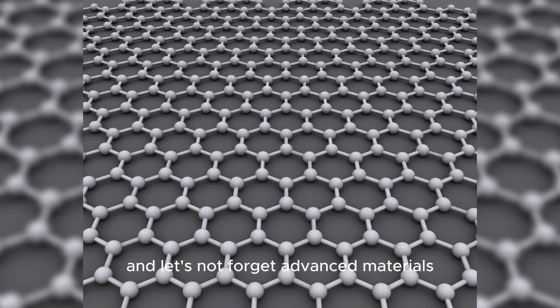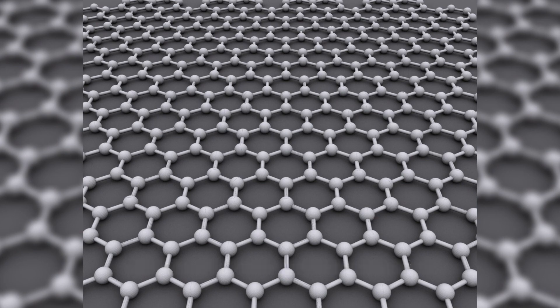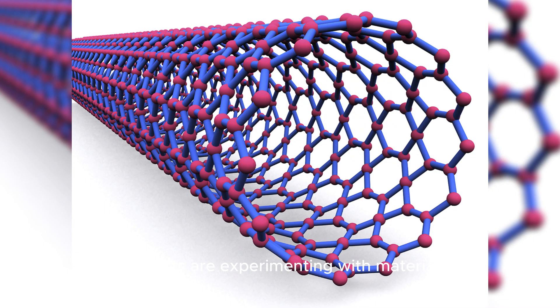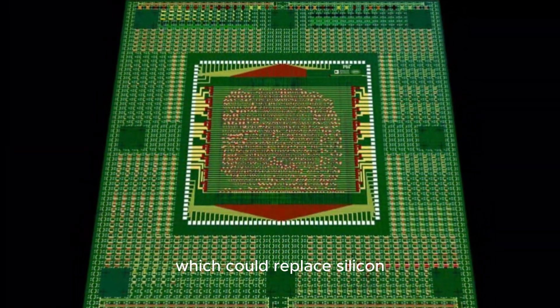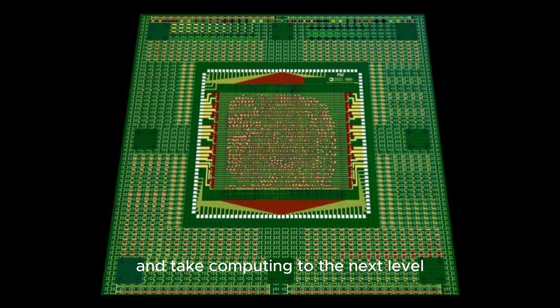And let's not forget advanced materials. Scientists are experimenting with materials like graphene and carbon nanotubes, which could replace silicon and take computing to the next level.